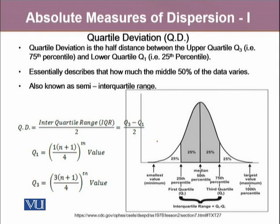Looking at the formula of quartile deviation, we can notice that quartile deviation equals the interquartile range divided by 2. Since we are dividing by 2, that's why we call it semi-interquartile range. We call the numerator the interquartile range because it is the difference of the third quartile and the first quartile.